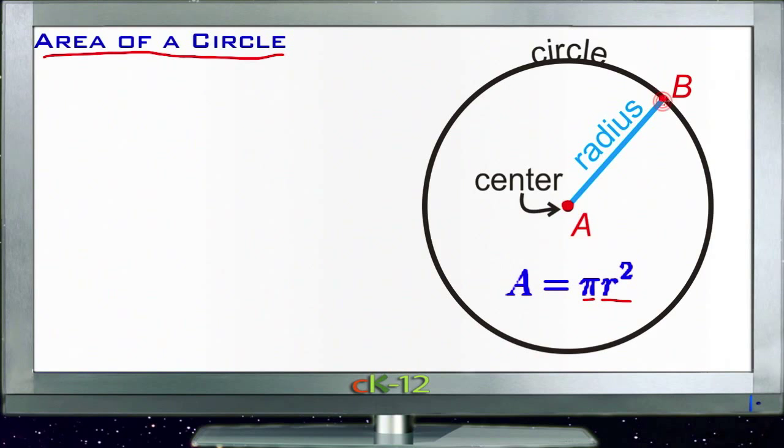The distance from the center of the circle to any point on the outside is called the radius. Whatever that value is, you take it, multiply it by itself, and then multiply it by pi to get the area in square units.